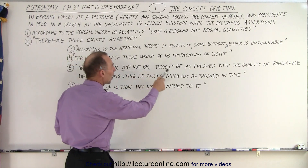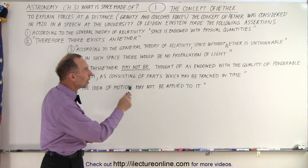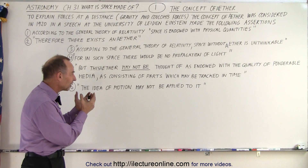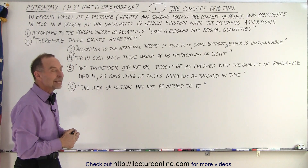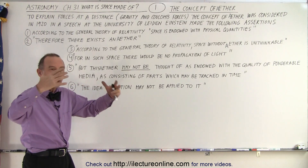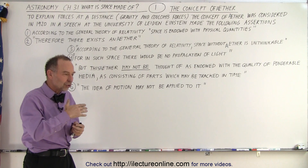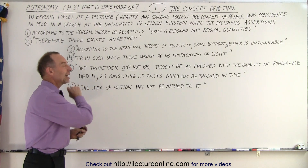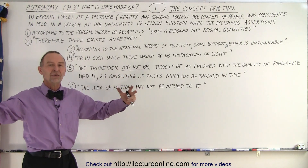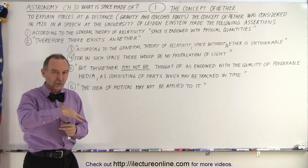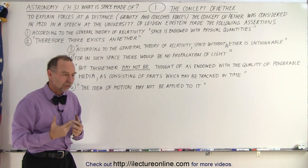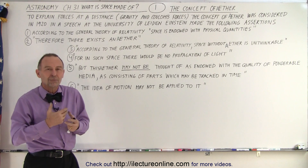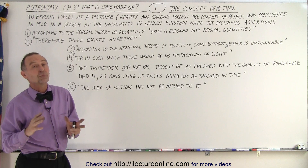But this ether may not be thought of as endowed with the quality of ponderable media. In other words, it's not a substance you can touch, feel, flow, or pour into a water pitcher. It's not a medium consisting of parts which may be tracked in time. Don't think of it as a river of water flowing through space, as something you can track moving from point A to point B. He says the idea of motion may not be applied to it. Space has a quality that allows electricity and magnetism to flow through it and allows gravity to act within it — but it's not a material that can be poured, tracked, or flow. Something we do not yet understand.